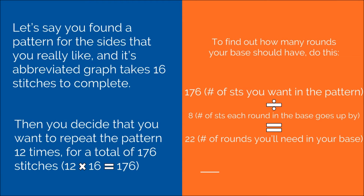Here's an example of how you could use the information from an abbreviated graph to find out the number of rounds you should do in your base. Let's say you found a pattern for the sides that you really like and its abbreviated graph takes 16 stitches to complete. Then you decide that in order to get a good size for your bag, you should repeat that pattern 12 times for a total of 176 stitches — 12 repetitions of 16 stitches is 12 times 16, which gives you 176. So to find out how many rounds your base should have, divide the number of stitches you want in the pattern — which in this case is 176 — by 8, which is the number of stitches each round in the base goes up by, and you'll get 22, which is the number of rounds you'll need in your base for this example.